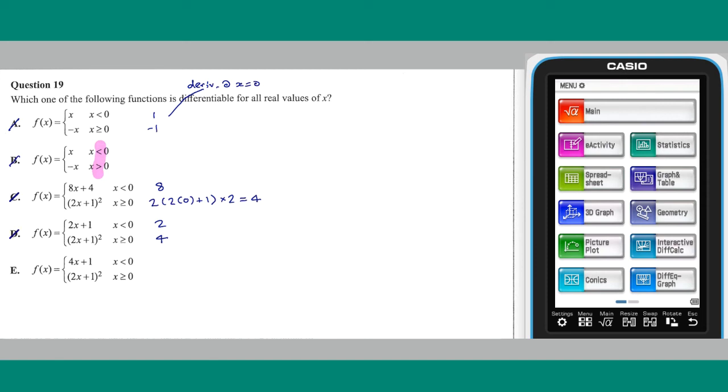Looking lastly at option e, at x equals 0, the derivative of its pieces are 4 and 4, and so e is differentiable for all x.